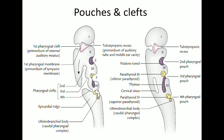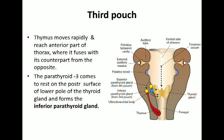In the diagram, the dorsal wing of the third pouch forms the inferior parathyroid and the ventral wing forms the thymus. Parathyroid 3 moves with the thymus, migrating downwards and medially to reach its final position. The inferior parathyroid — shown as the yellow structure — is fixed to the lower pole of the thyroid gland on its dorsal aspect, where it loses its attachment with the thymus gland.